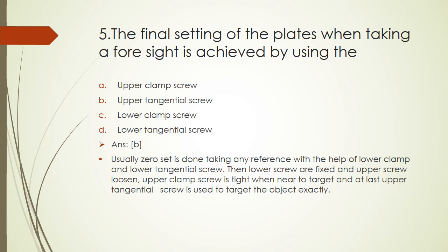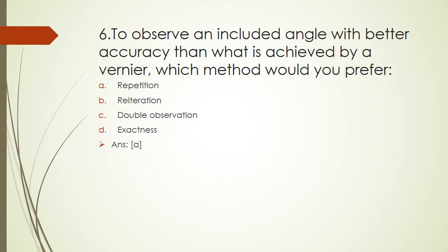Question 6: To observe an included angle with better accuracy than what is achieved by a vernier, which method would you prefer: repetition, reiteration, double observation, or exactness. The right answer is repetition.